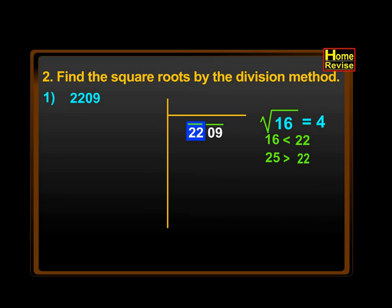Now the square root of 16 is 4. Therefore, we write 4 both above and on the left of the lines as shown.